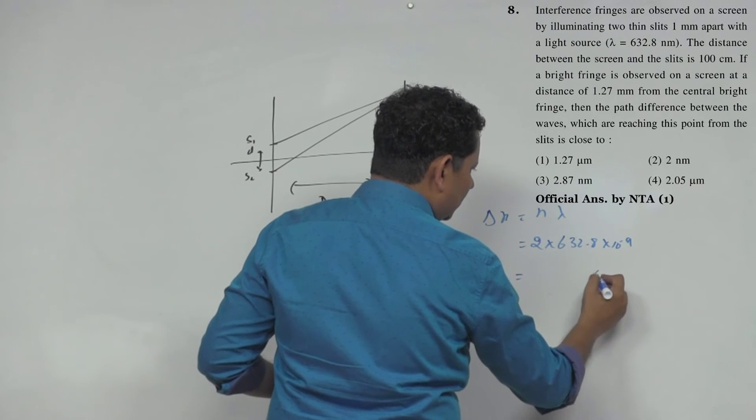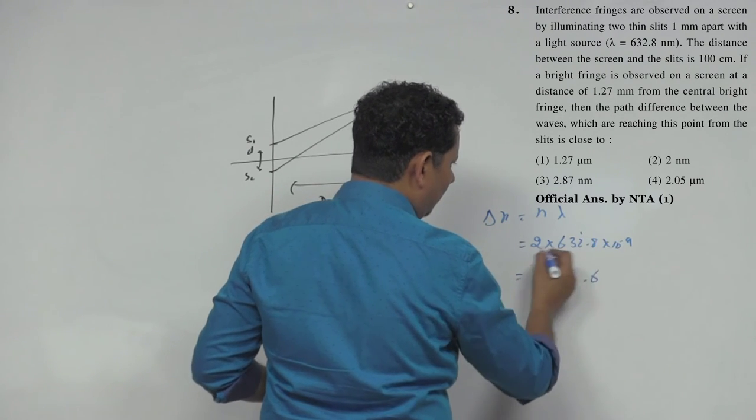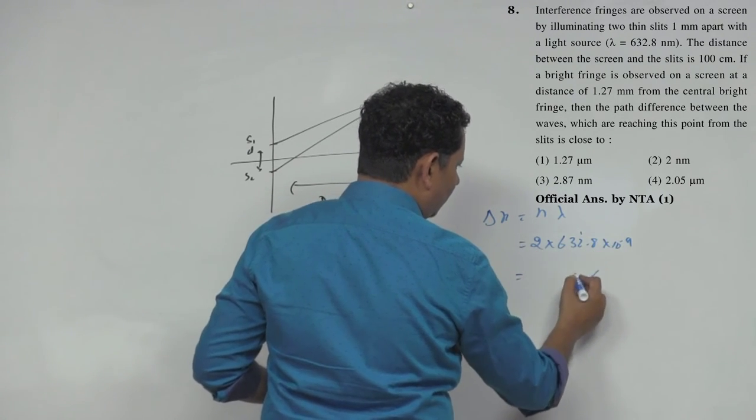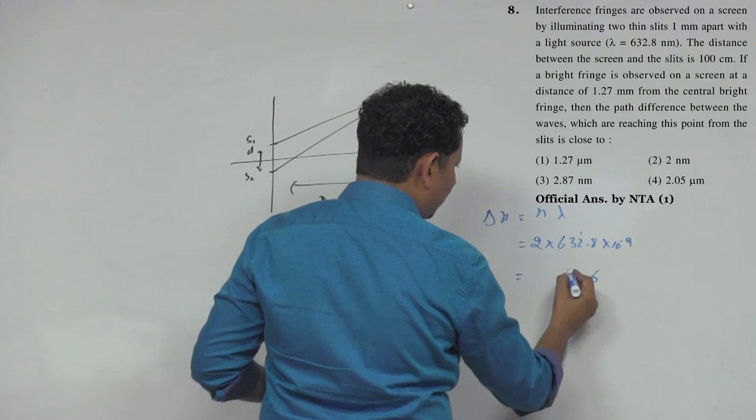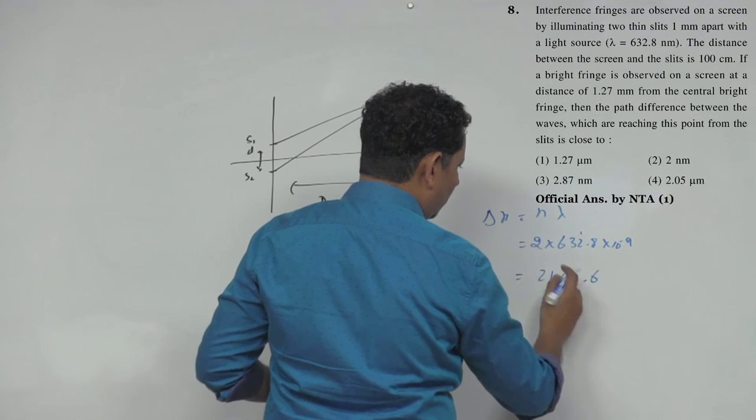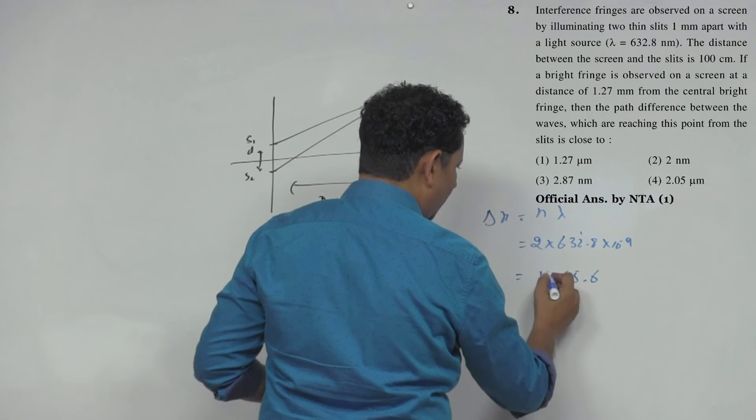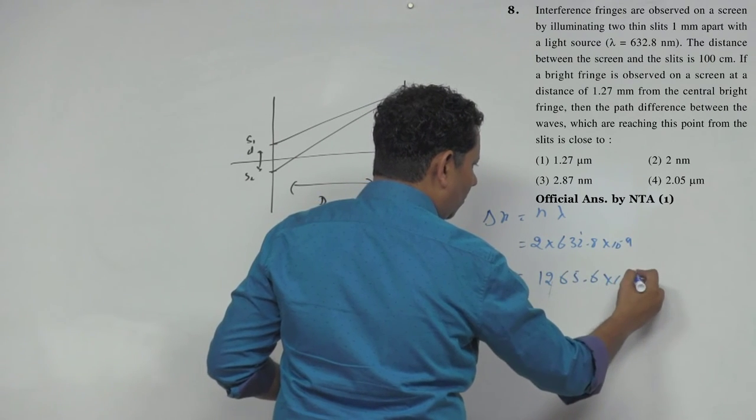Now, this will be 2 times 632.8, which equals 1265.6 into 10 to the power minus 9.